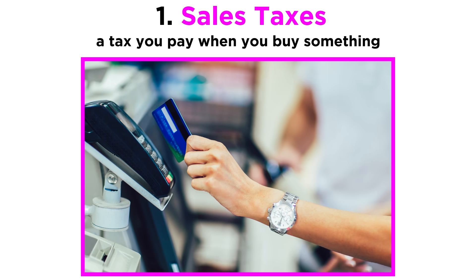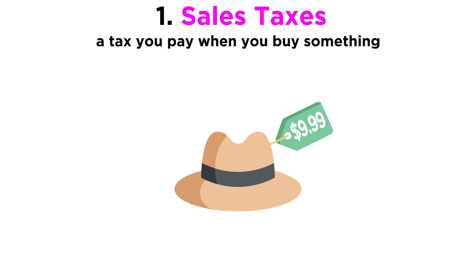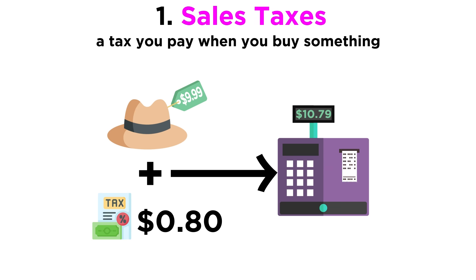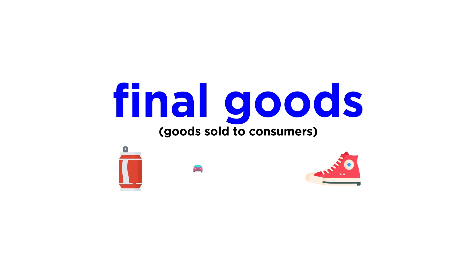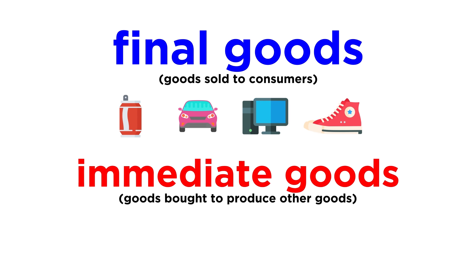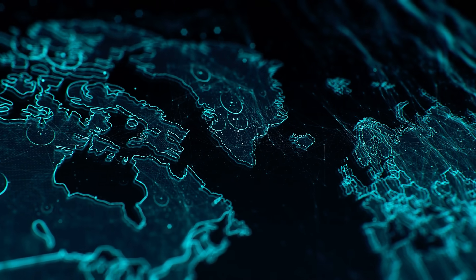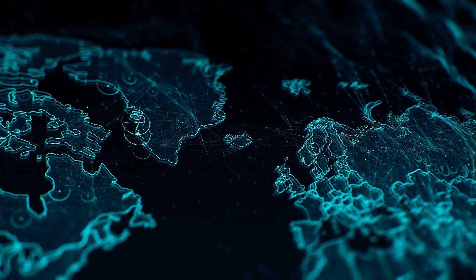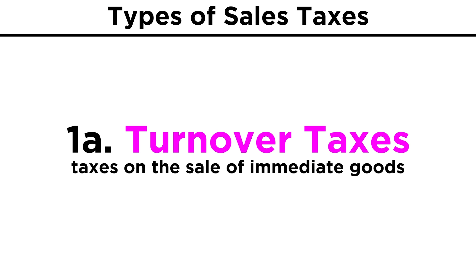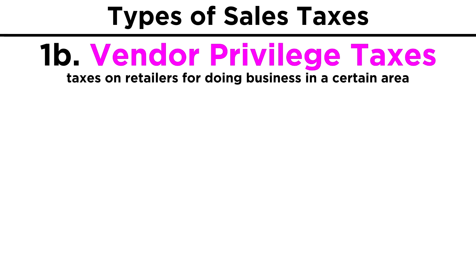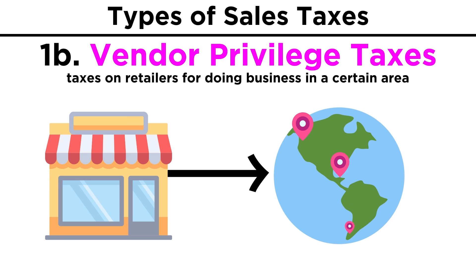A sales tax is a tax you pay when you buy something. Usually, whoever is selling you something can collect those sales taxes the moment you make the purchase. This is why when you buy a hat for $9.99, you actually end up paying around $10.79 when you check out — that additional 80 cents is the sales tax. It's important to note that this is on final goods, or goods meant to be sold to your average consumer, as opposed to intermediate goods, or goods that are bought to produce other goods. Nearly every country in the world has some form of a sales tax, but there are different types, including turnover taxes, which are taxes on the sale of intermediate goods, or vendor privilege taxes, which are taxes on retailers for the privilege of doing business in a certain area.